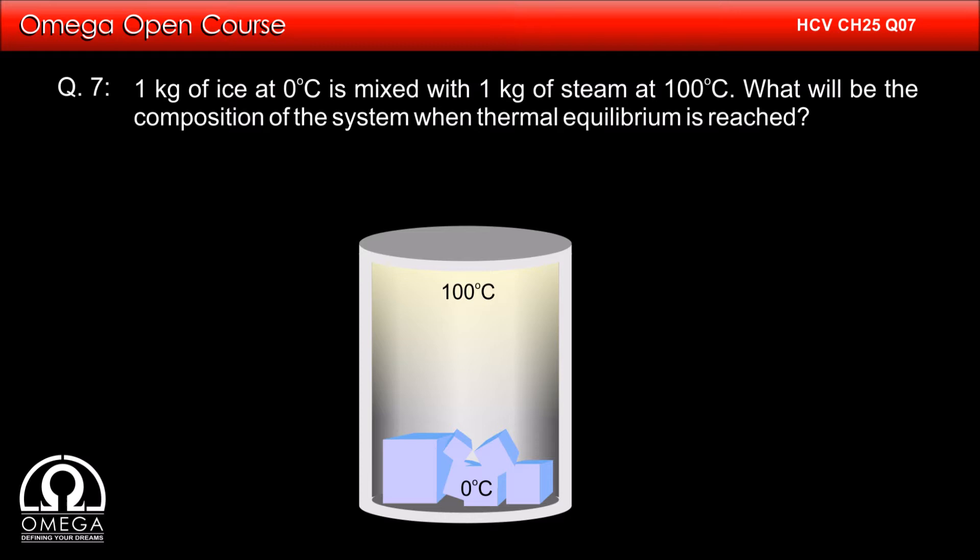1 kg of ice at 0 degree celsius is mixed with 1 kg of steam at 100 degree celsius. What will be the composition of the system when thermal equilibrium is reached?